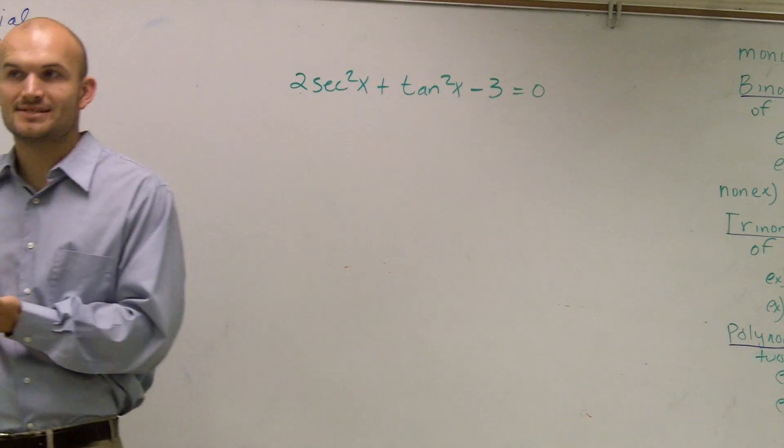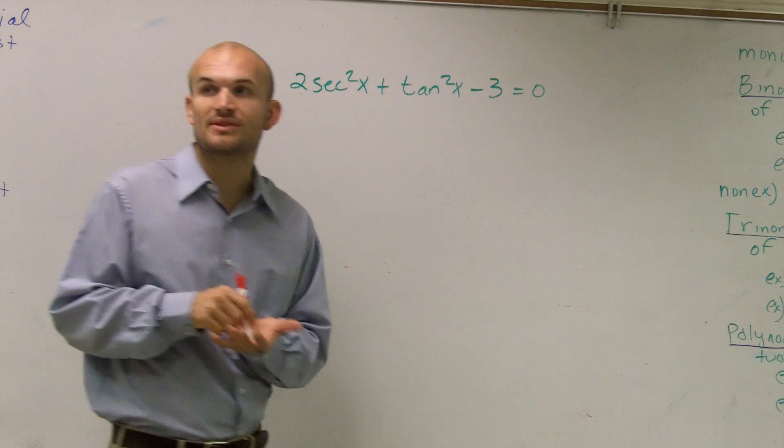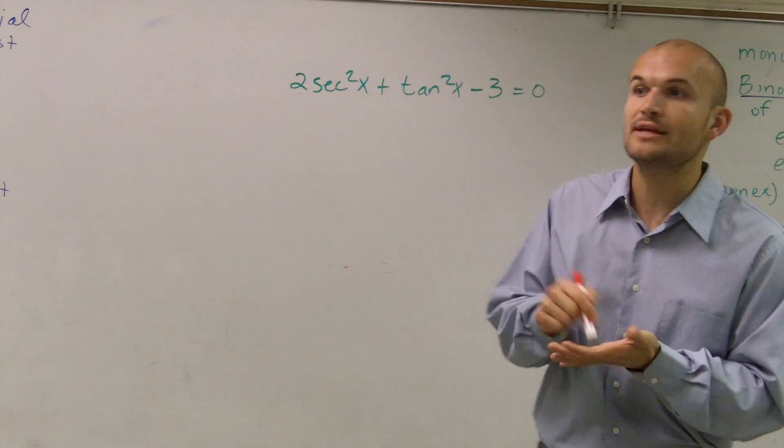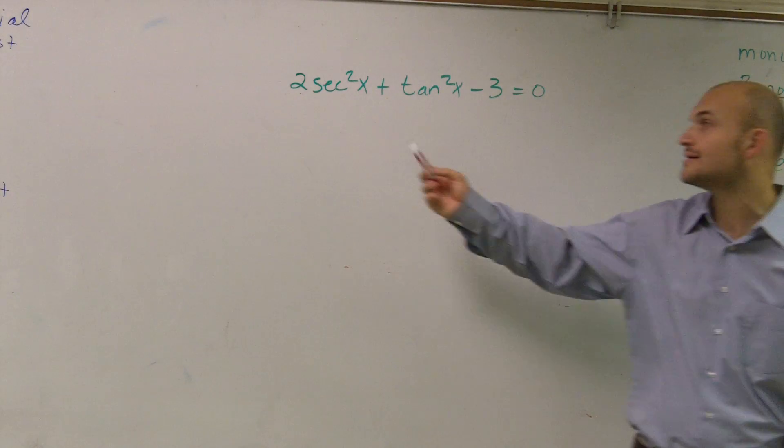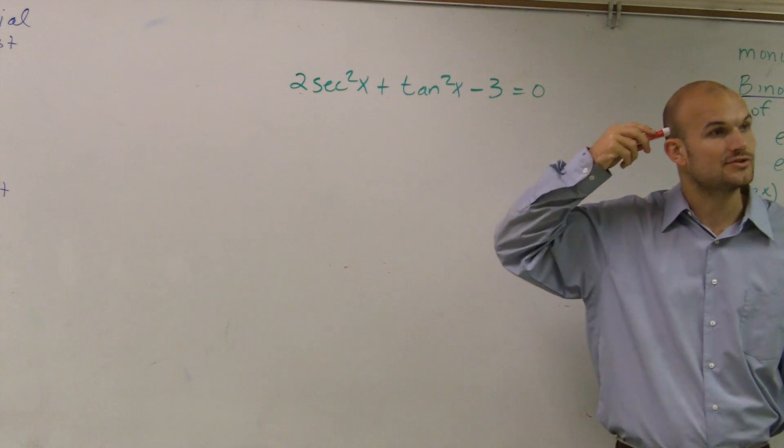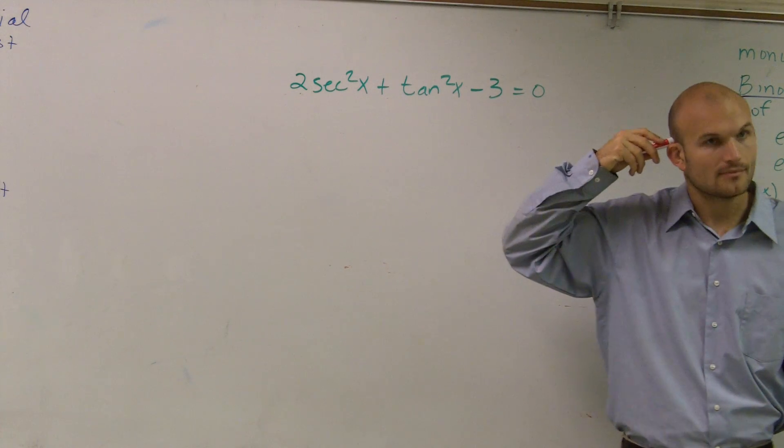So what are some other ways that we've learned? Well, we've looked at our Pythagorean identities. And when looking at your Pythagorean identities, we know that secant and tangent are related to each other, aren't they? Yes.